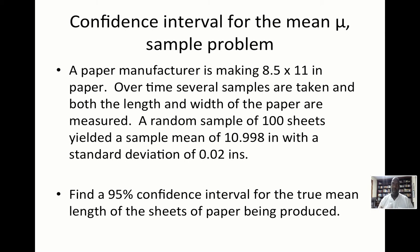A paper manufacturer is making 8.5 by 11 paper. Over time, the manufacturer will take several samples to determine whether or not the specifications around the length and width are in fact being met. One particular sample involved 100 sheets of paper where the length was measured, yielding a sample mean of 10.998 inches with a standard deviation of 0.02 inches.